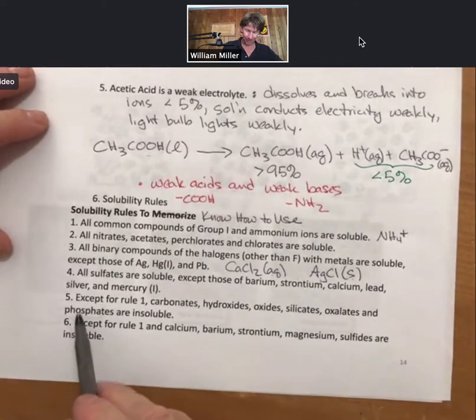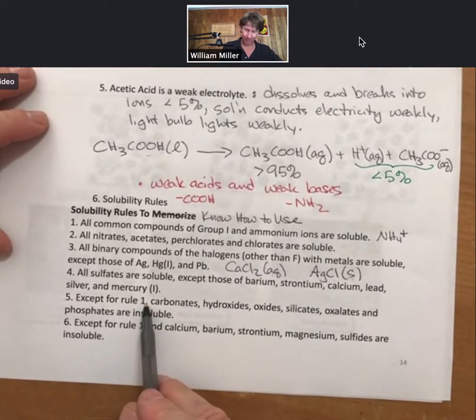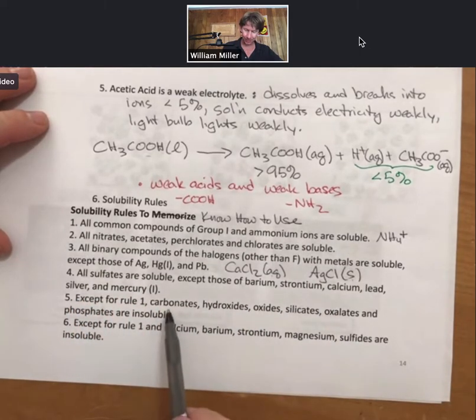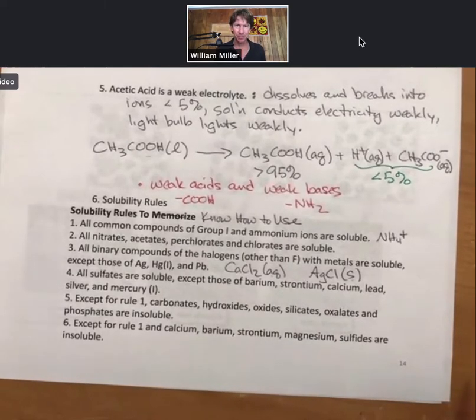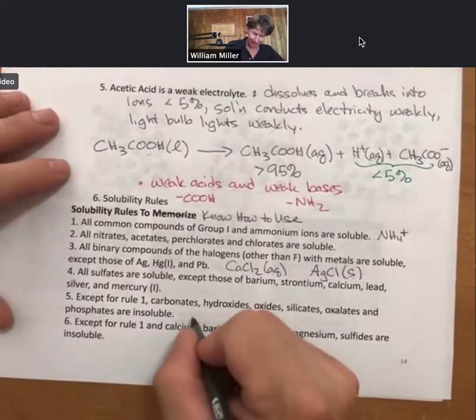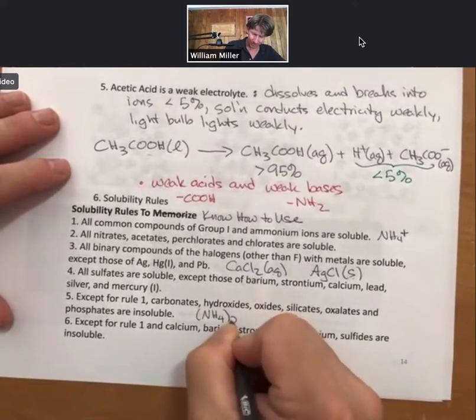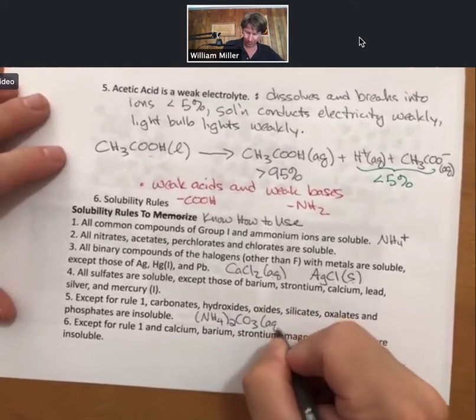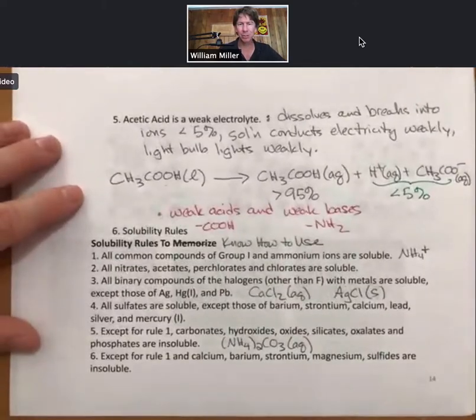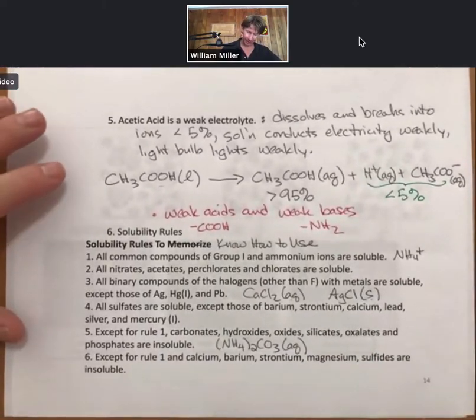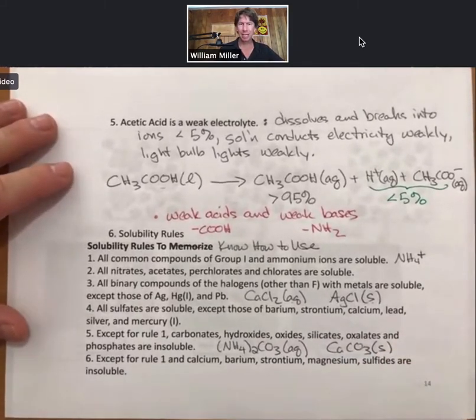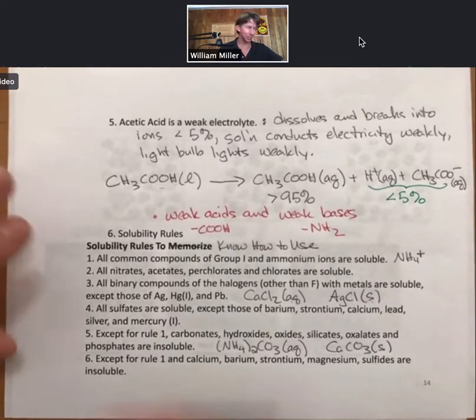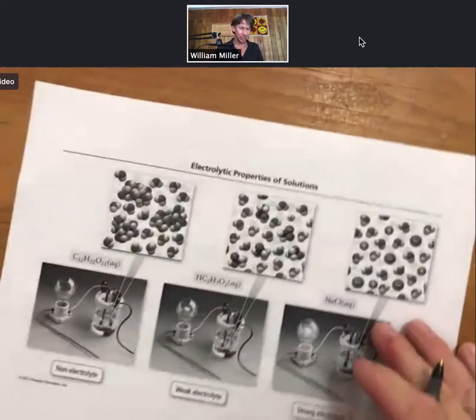And then let's do rule number five. Except for rule number one, which says all of these things are soluble, carbonates, hydroxides, oxides, etc. are insoluble. What that means is ammonium carbonate is soluble and therefore aqueous when dissolved in water, but calcium carbonate would be a solid. So that's a little guide on how to use these rules. I'm going to keep my periodic table a little closer.